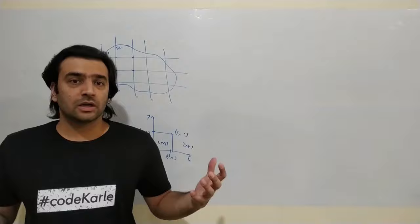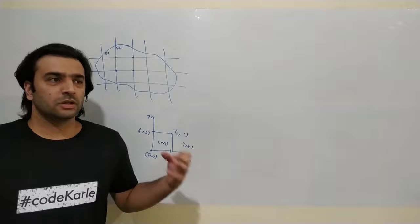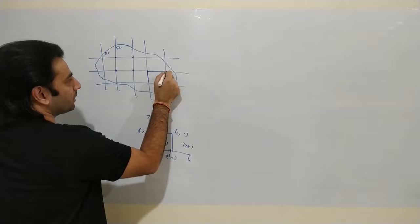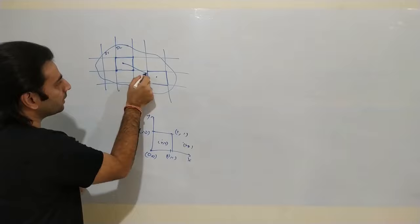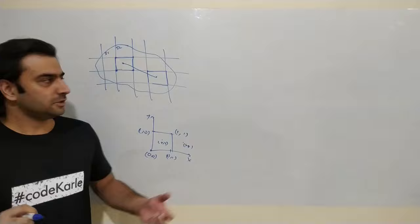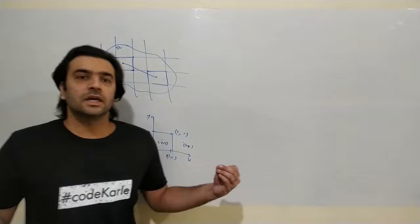One good thing about these segments is that because they are functions of lat-long, we can easily identify an approximate distance between two segments. If we want the distance between two segments, we find the center points of both as two lat-longs and calculate the aerial distance between them. That's a very easy mathematical calculation: given two lat-longs, find the aerial distance.